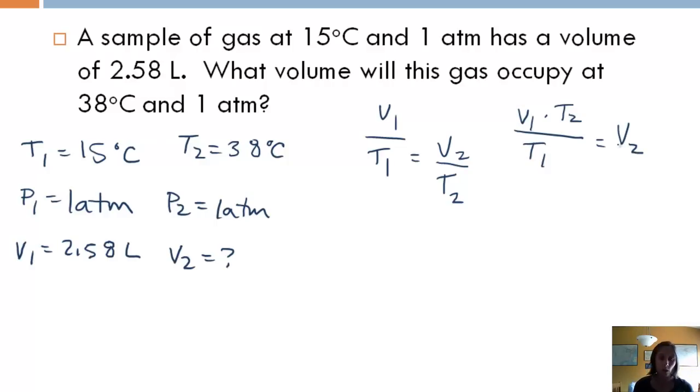Now, we talked about before where if the units were all the same, we didn't have to convert. Well, the only case that that doesn't apply to is temperature. All temperatures have to be in Kelvin. In order to go from Celsius to Kelvin, you're going to add 273. So I've already done that. Our first one gives us 288 Kelvin. And if we add 273 to 38, we get 311 Kelvin. So those are going to have to be converted, but all other units, as long as they're the same, are okay.